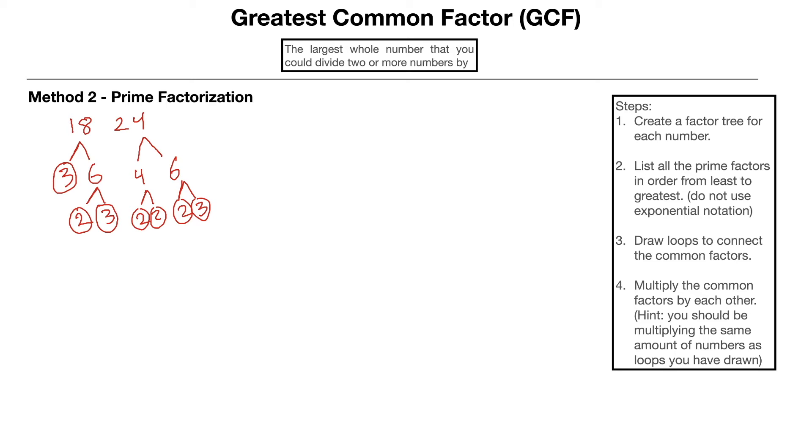Those are the prime numbers that multiply give us that number. Next, step number two over here. We're going to list all the prime factors in order from least to greatest. We're not going to use exponential notation. Sometimes you do that when using primes, but we're not going to be doing that at this point in time. 18 equals 2 times 3 times 3 and then 24 equals 2 times 2 times 2 times 3.